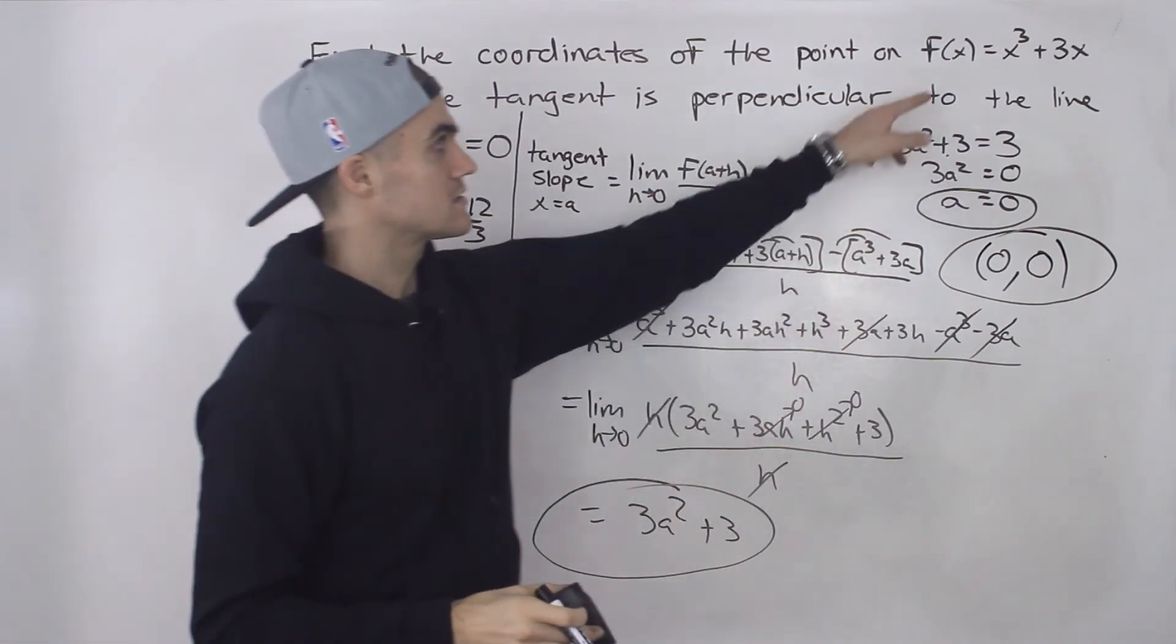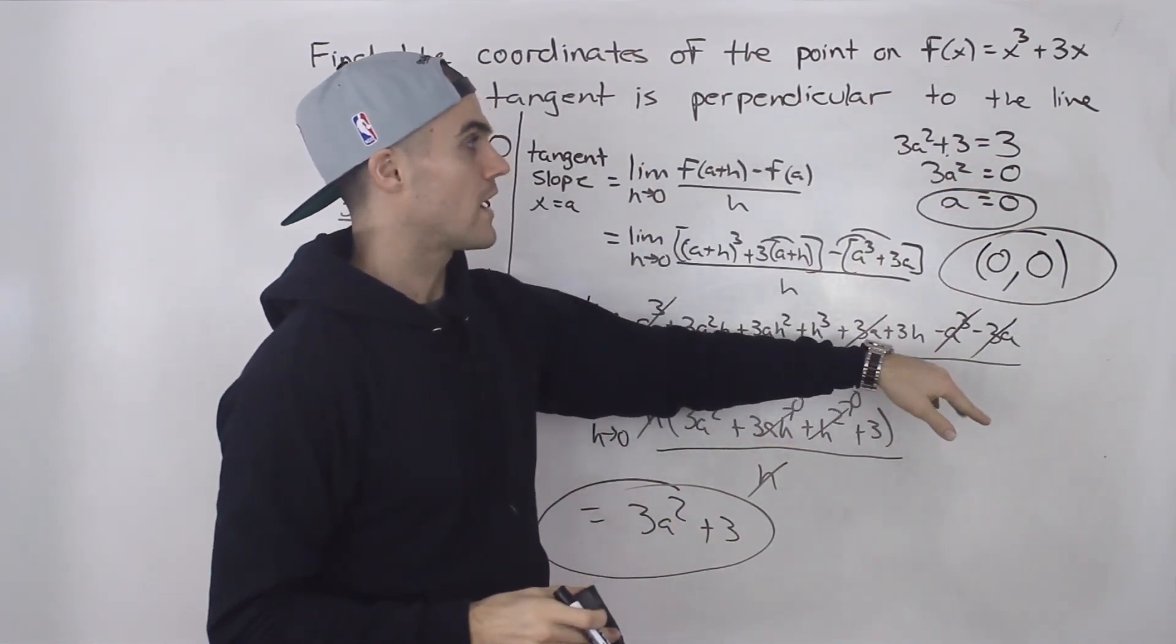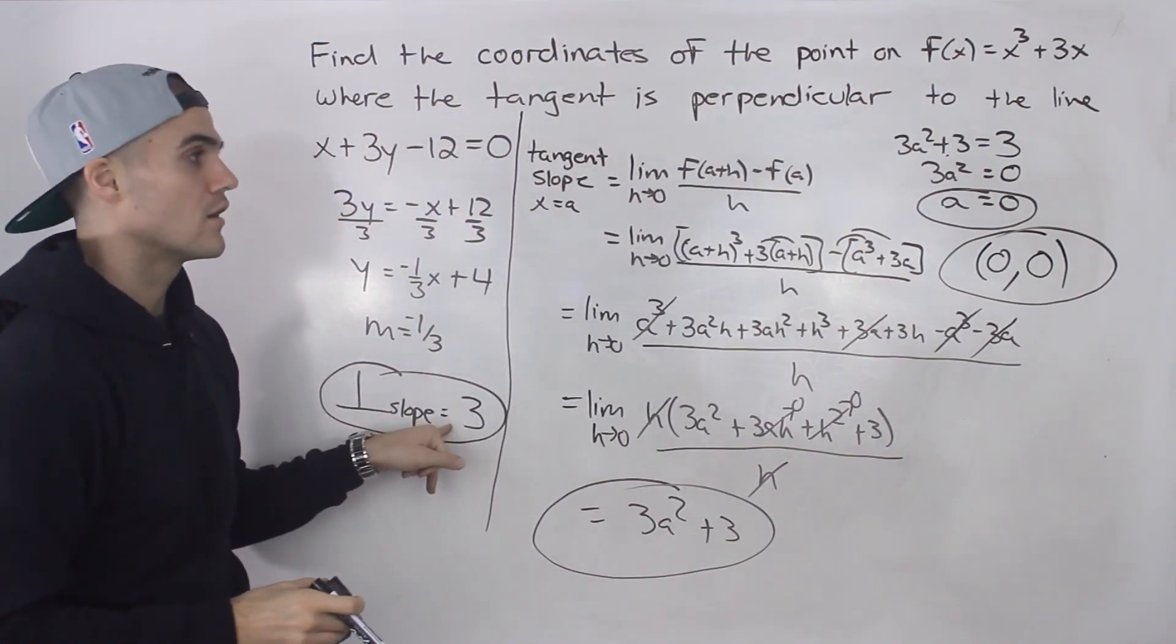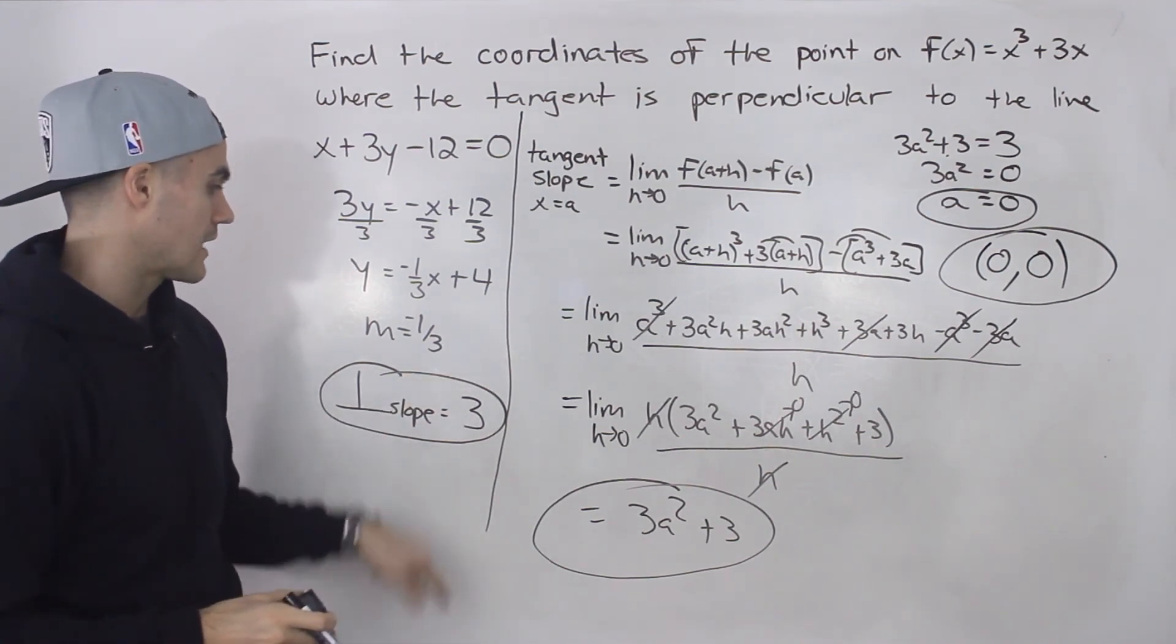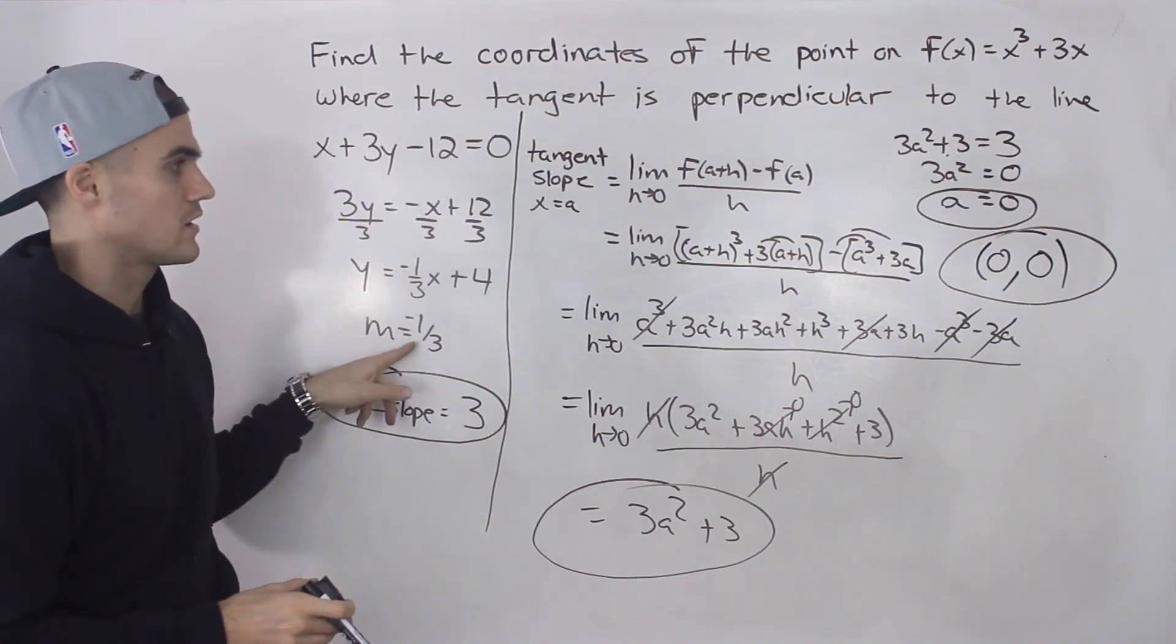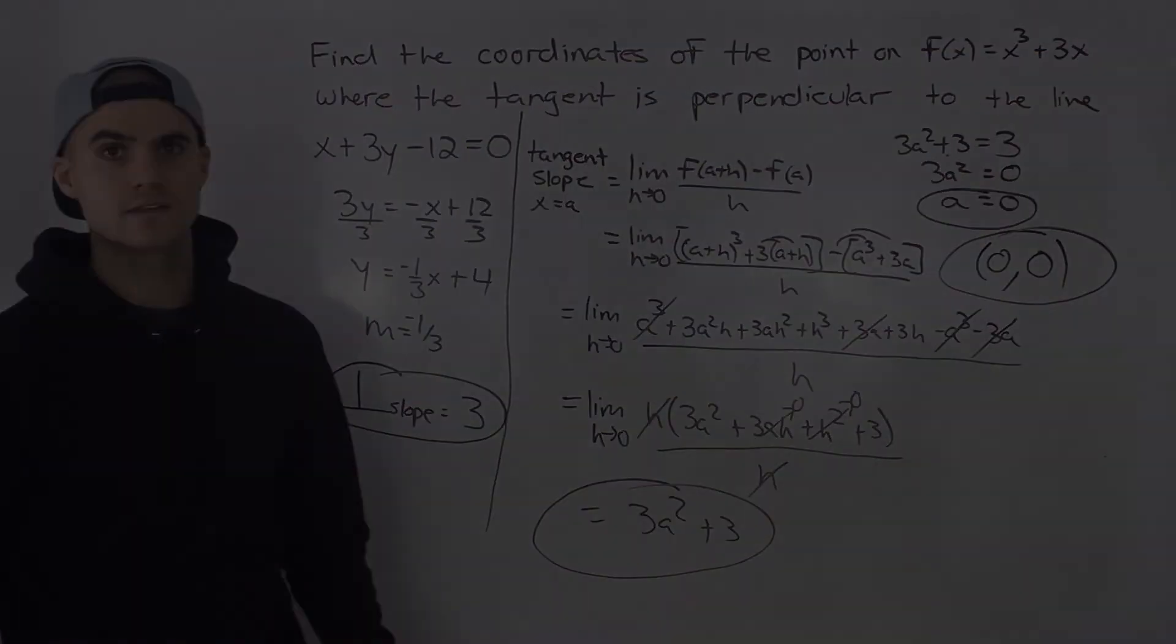So this function here is going to go through the origin, if you were to graph it, and then at the origin, it's going to have a slope of 3. The tangent is going to have a slope of 3. And that slope of 3 is perpendicular to this line, which had a slope of -1/3. So (0, 0) is your final answer.